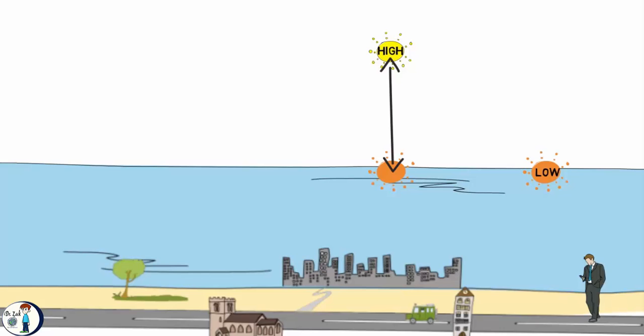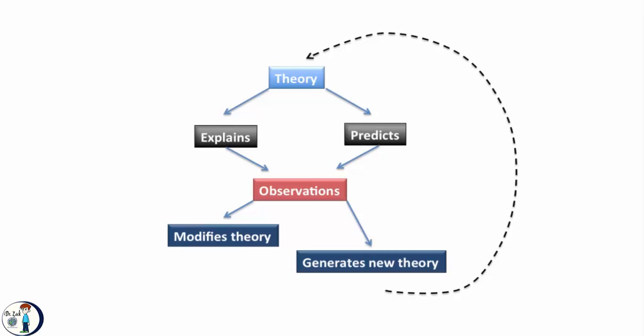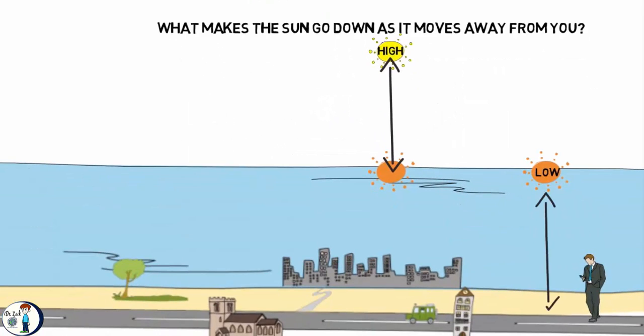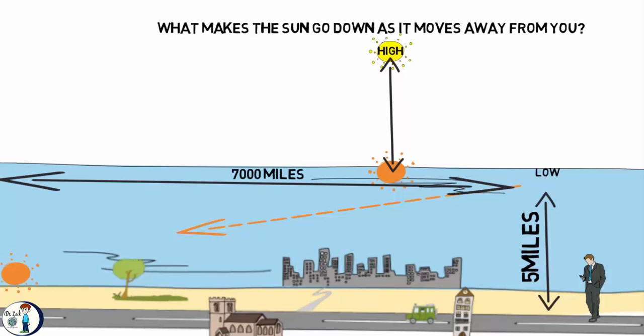Now, the question is, what makes the sun go down as it moves away from you? There are a few theories about this, but they can all be wrong. But let us explain one theory. If the atmosplane is only 5 miles up and the apparent sun is right above it, then yes, perspective can make the sun go down in less than 7,000 miles away from the observer.